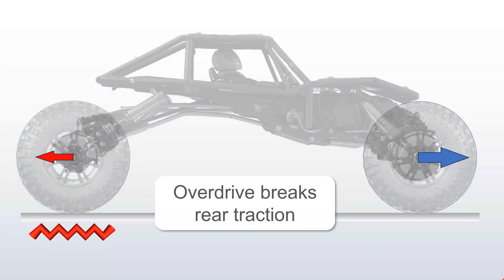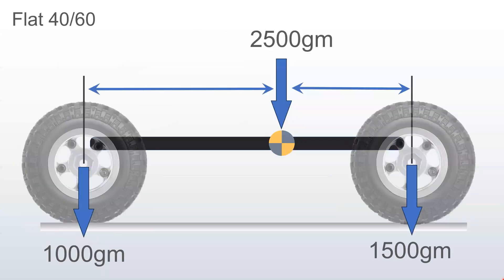So, if your vehicle weighs 2500 grams, that's going to be 1500 grams in the front and 1000 grams of downforce in the rear.